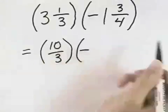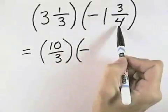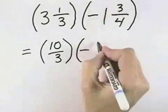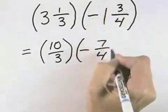The second one is negative, and 1 times 4 is 4, plus the 3 that's in the numerator is 7, for 7 over 4.